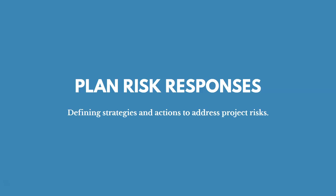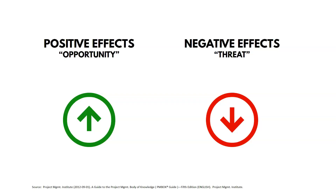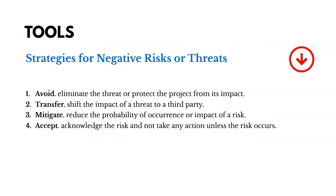Now we talk about planning risk responses — defining strategies and actions to address project risks. Key inputs are the risk management plan and the risk register. Risks with positive effects are called opportunities; those with negative effects are called threats. Strategies for threats include: avoid (eliminating the threat altogether), transfer (shifting it to another party by paying them to handle it), mitigate (reducing the probability or impact), and accept (acknowledging you can't address every risk and taking no action).